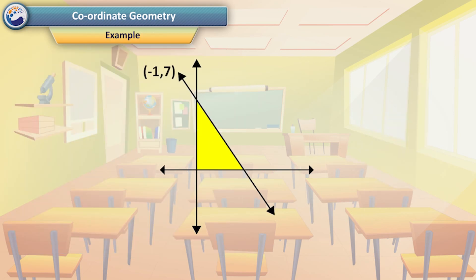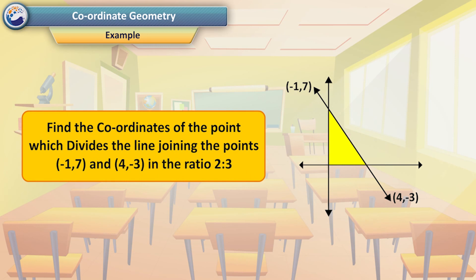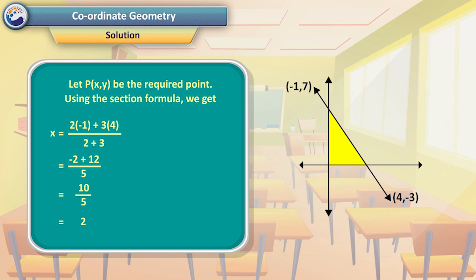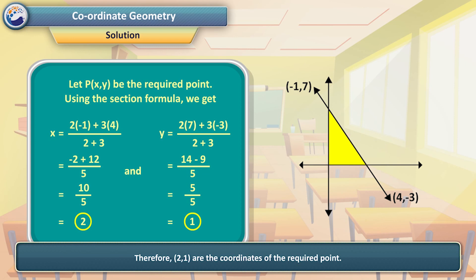For example, find the coordinates of the point which divides the join of (−1, 7) and (4, −3) in the ratio 2:3. Solution: Let P(x, y) be the required point. Using the section formula, x = (2×4 + 3×(−1))/(2+3) = (−2 + 12)/5 = 10/5 = 2. And y = (2×7 + 3×(−3))/(2+3) = (14 − 9)/5 = 5/5 = 1. Therefore, (2, 1) are the coordinates of the required point.